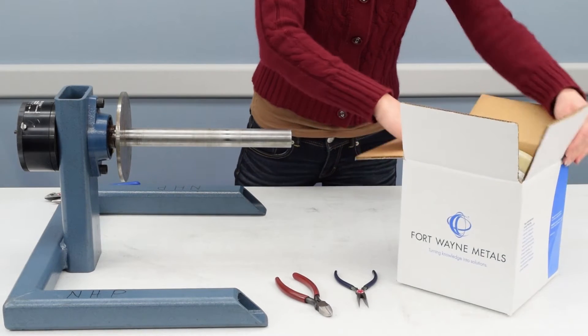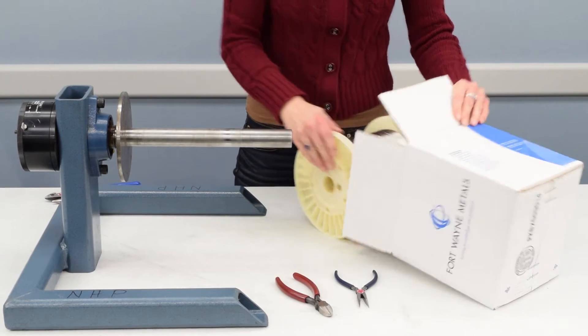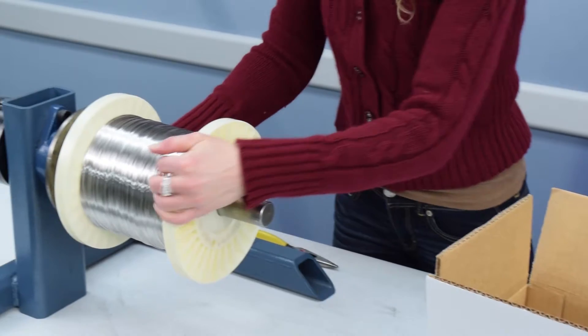You will begin by pulling your spool out of the box. Next, you will place your spool horizontally on the lead off.